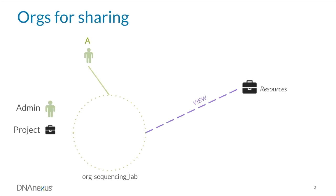User A, as the org admin, has the ability to add users to the org. By adding users B and C to the org, user A is giving these users permissions to all projects that are shared with the org. In this case, users B and C now have view permissions to the Resources project.